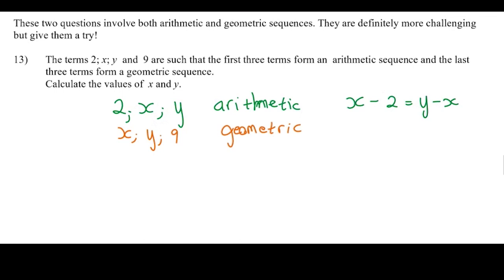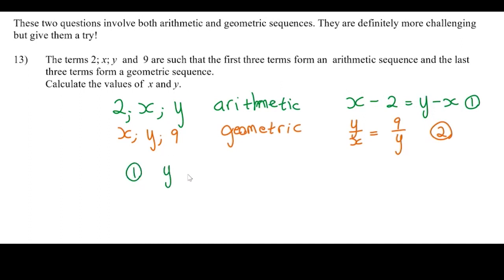From the geometric condition, y/x must equal 9/y. So we have two equations: the green one (arithmetic) and the orange one (geometric). From equation one we rearrange to get y = 2x − 2. Using the cross-multiplication trick to clear fractions in equation two, we get y² = 9x.